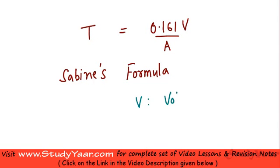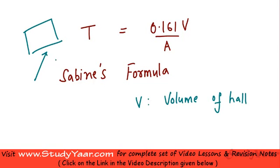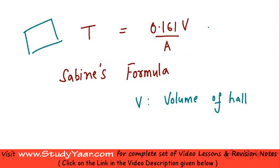V is the volume of the enclosed space, more specifically the volume of the hall. This formula was deduced by Sabin who experimented with a lecture hall and used his observations to arrive at this particular formula.